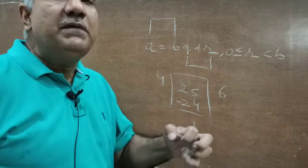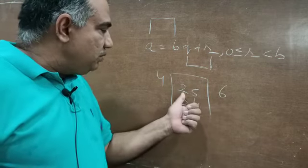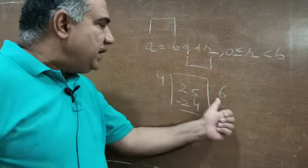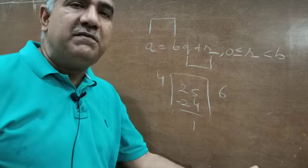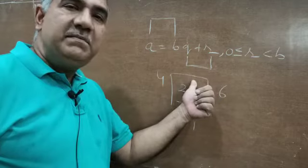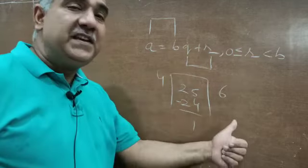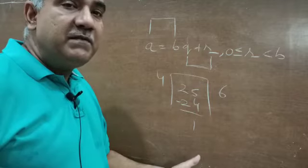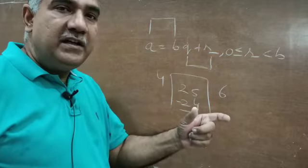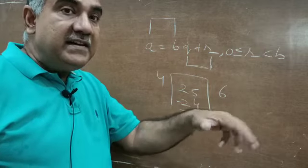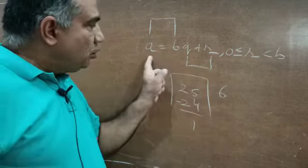You cannot have it that today you divide 25 by 4 and get quotient 6, but tomorrow some other quantity comes. If 25 is the dividend and 4 is the divisor, quotient has to be 6 and remainder has to be 1. That is why q and r are called unique — if dividend and divisor are fixed, q and r are also fixed.